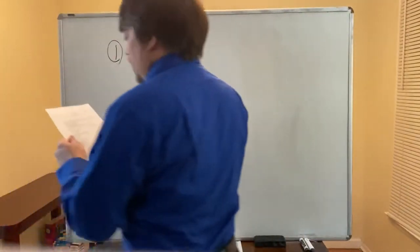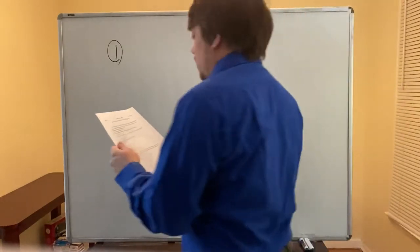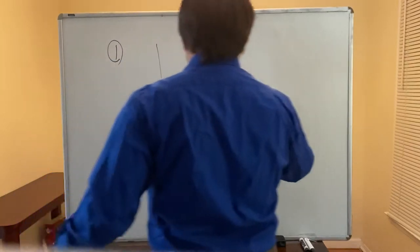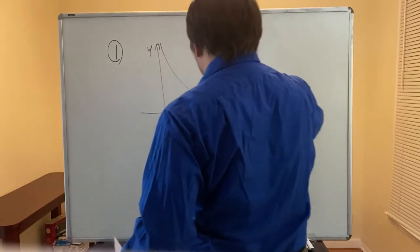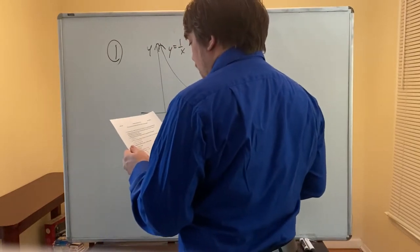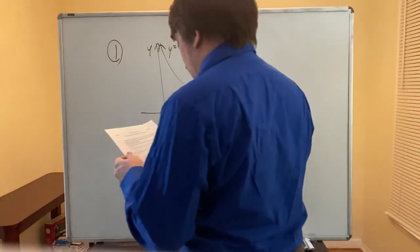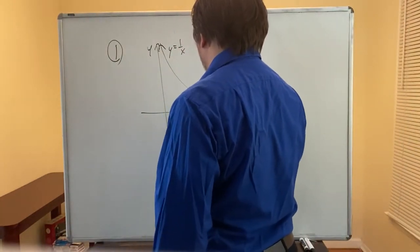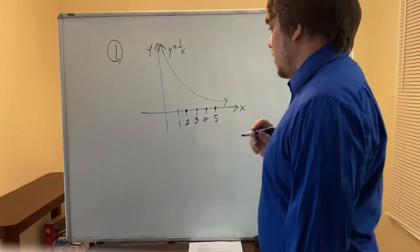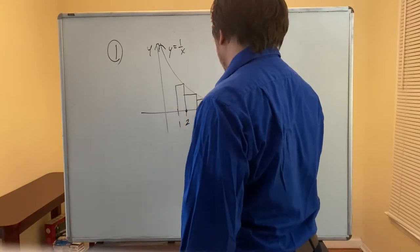Number one, part A: estimate the area under the graph of f(x) = 1/x from x = 1 to x = 5 using four approximating rectangles and right endpoints. Sketch the graph and the rectangles. So let's sketch y = 1/x. We're going from x = 1 to x = 5, using four rectangles, so the endpoints are at 1, 2, 3, 4, and 5. Using right endpoints, we take the height of the function at each right endpoint — that's the height of each corresponding rectangle.